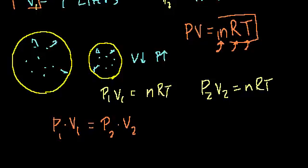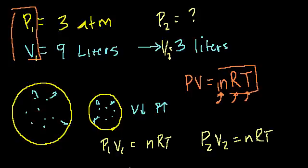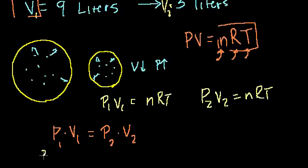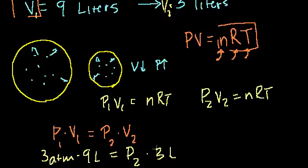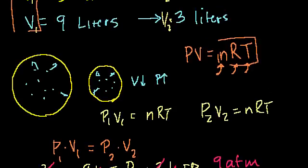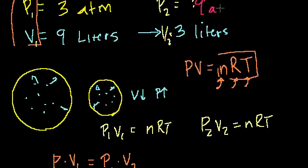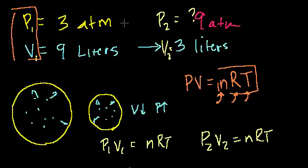So what was P1? P1, our initial pressure, was 3 atmospheres. So we have 3 atmospheres times 9 liters is equal to our new pressure times 3 liters. Dividing both sides by 3, the liters cancel out, and we're left with 9 atmospheres. That should make sense: when you make the volume one third of your original volume, then your pressure increases by a factor of 3.